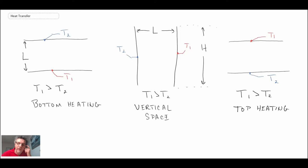What we have here are three different geometries—two of them horizontal and one vertical. These are the plates that are either heated or cooled. Blue indicates a cooler surface, red indicates hotter, and there is a fluid in the space between these two plates, be them horizontal or vertical.